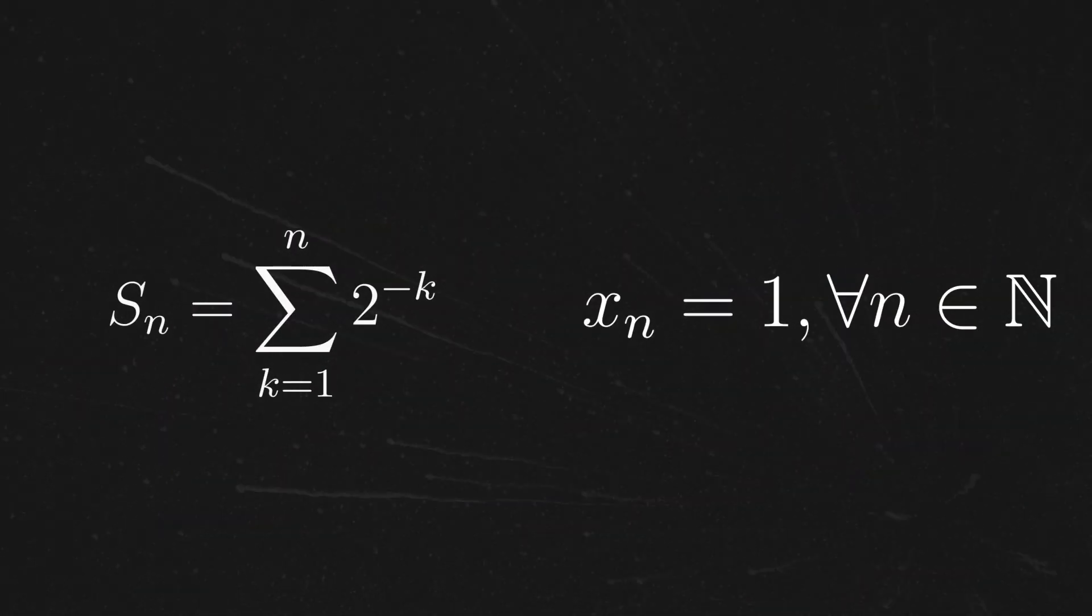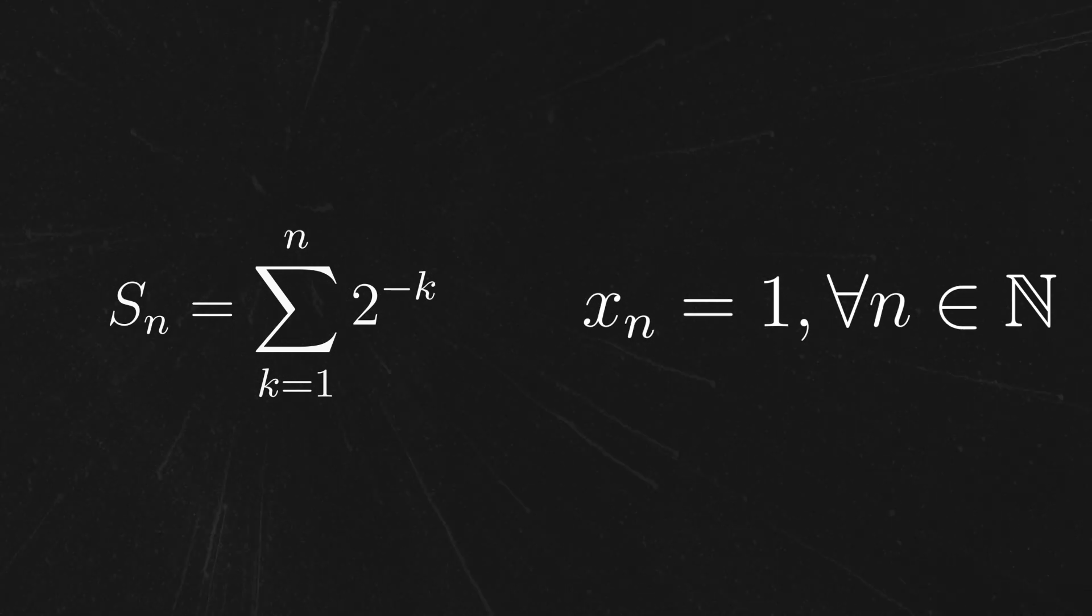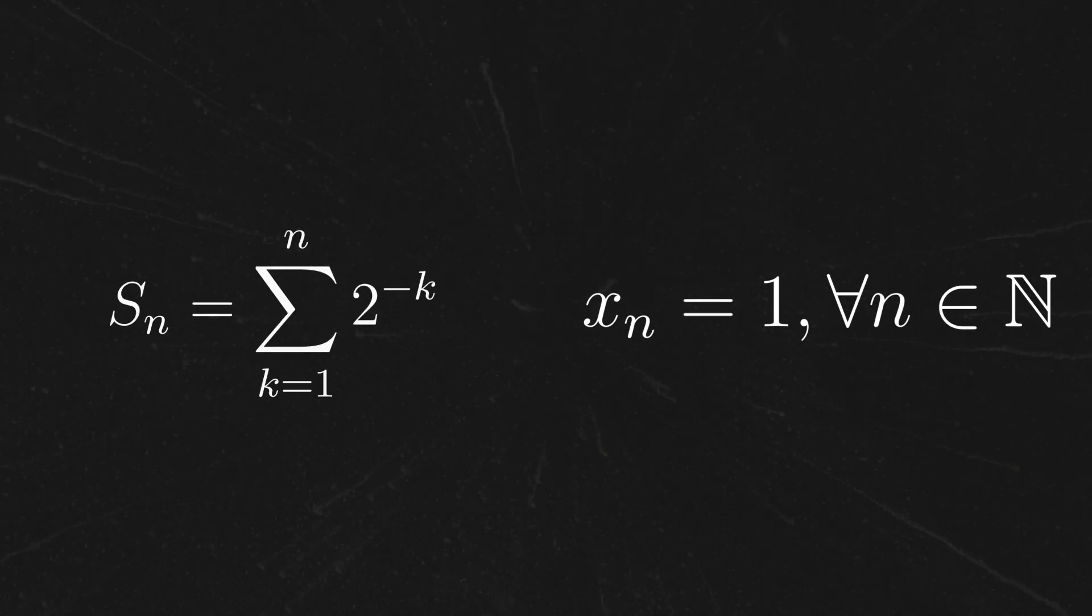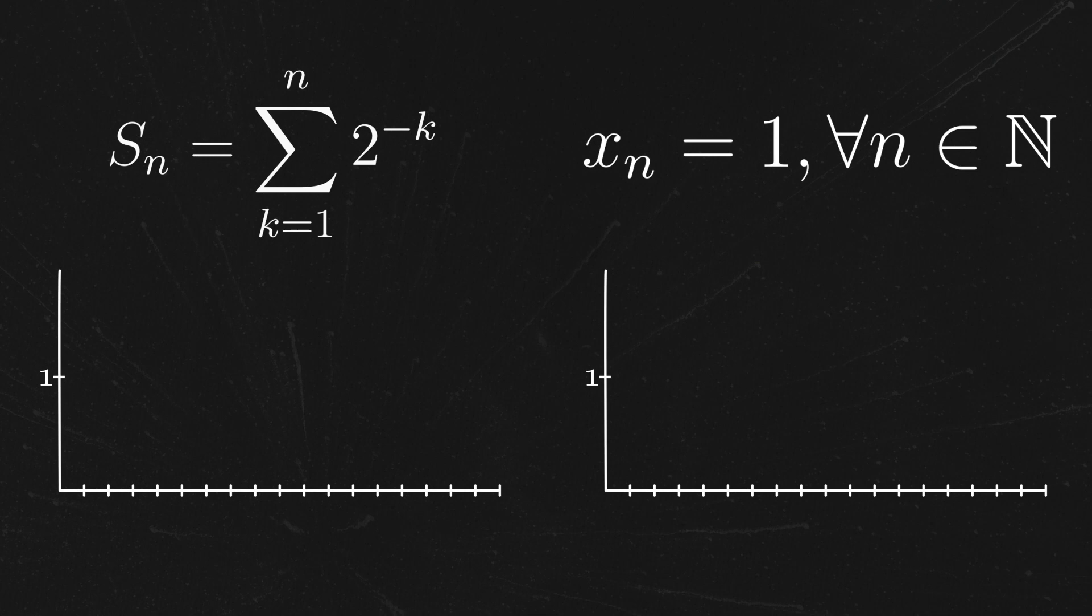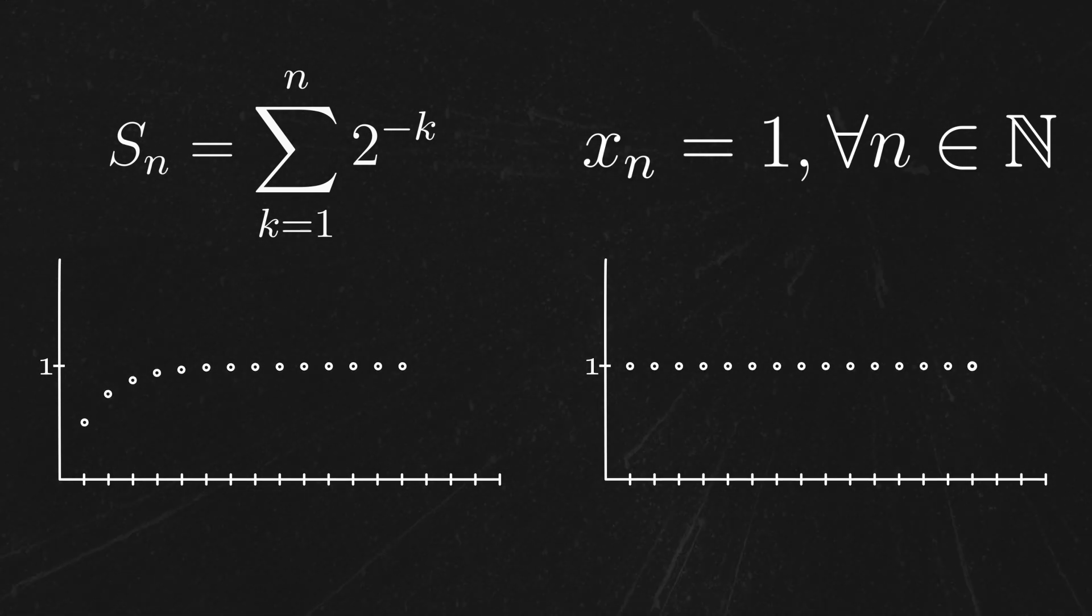So now we have two rational Cauchy sequences, the constant sequence and the partial sum sequence, and both of these represent the number 1, but they're distinct sequences. Since we'll want 1 to equal 1 in the real numbers, we're going to need a way to identify sequences that tend towards the same thing.